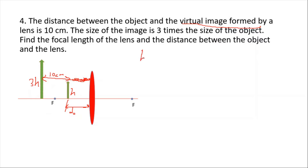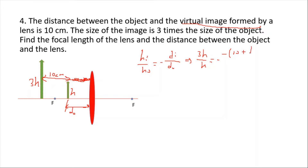Starting with the magnification formula: h_image / h_object = -d_image / d_object. The image height is 3h and the object height is h, so 3h/h = 3. Since this is a virtual image, the image distance is negative: -(10 + d_object) / d_object.